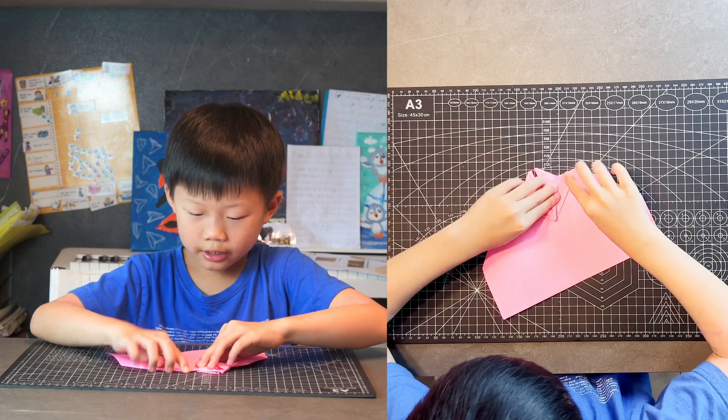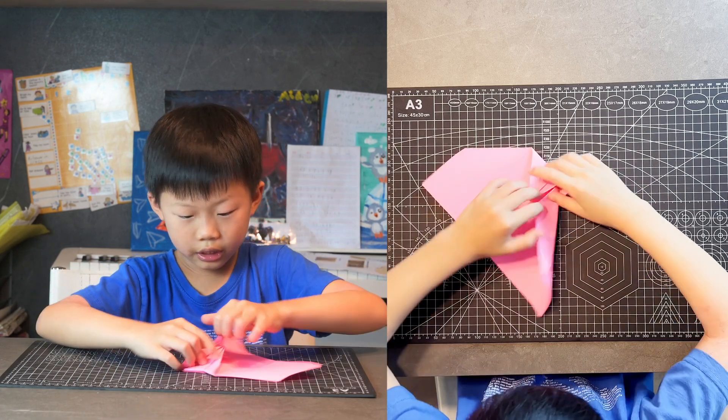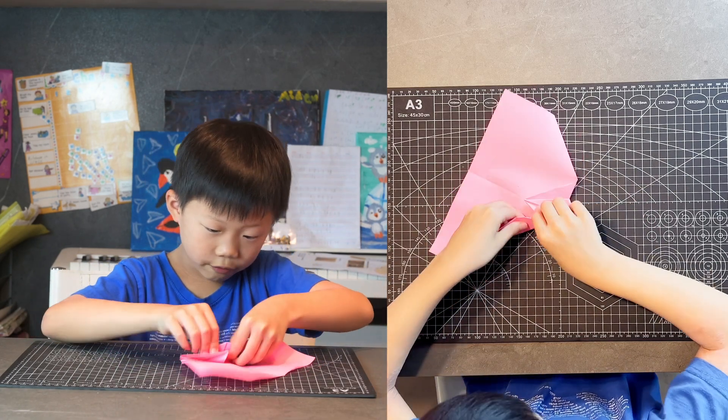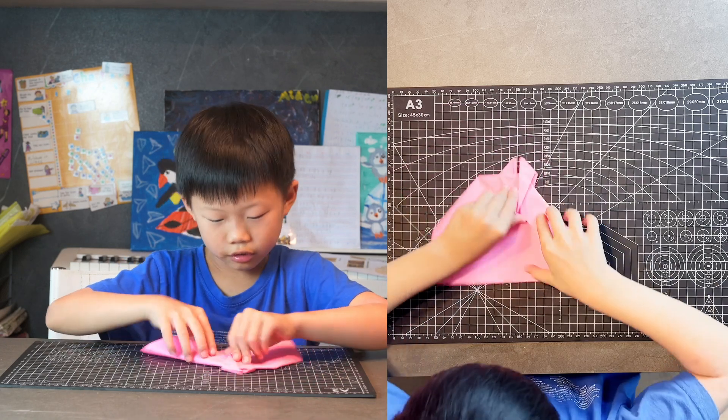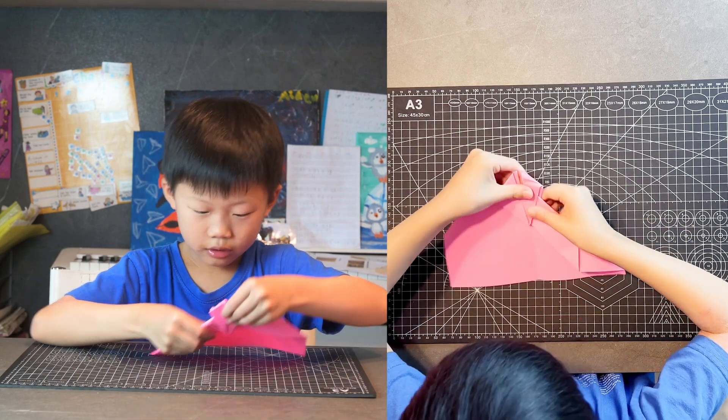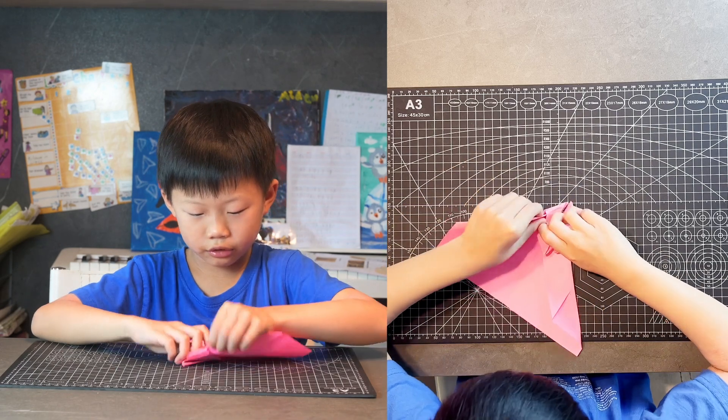Pull this edge to center crease all the way. So you'll need to open this pocket folding it, which is pretty hard. And then do the same thing on the other side.